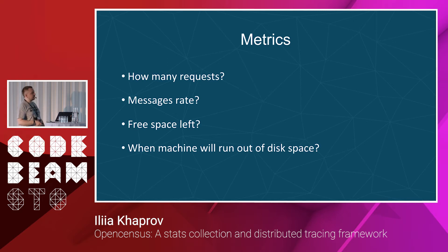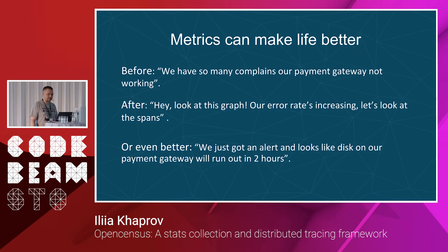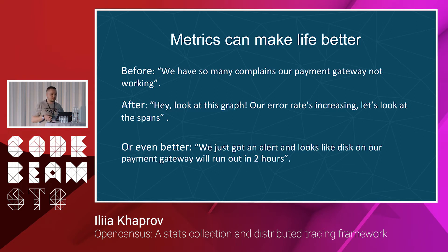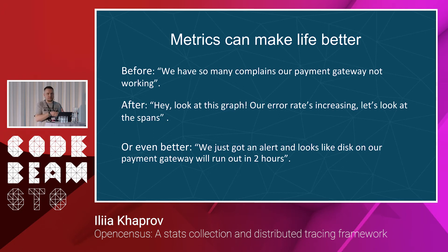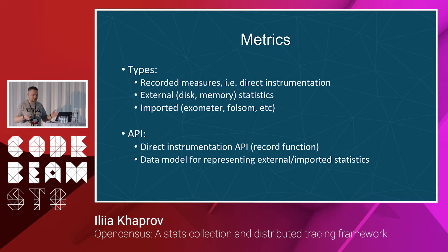Another big thing in the definition is metrics. Metrics help you answer questions like how many requests, message rate, free space left, and again predict when a machine will run out of disk space. Metrics can make life better. Before adding them, you're kind of blind to what's going on — why everyone is complaining. Then you add simple instrumentation and you see on graphs that error rate is increasing. You can then go to spans and see where most time is spent, where the error happens. Or even better, add predictions and have alerts so ahead of time you know you'll be in trouble in two hours.